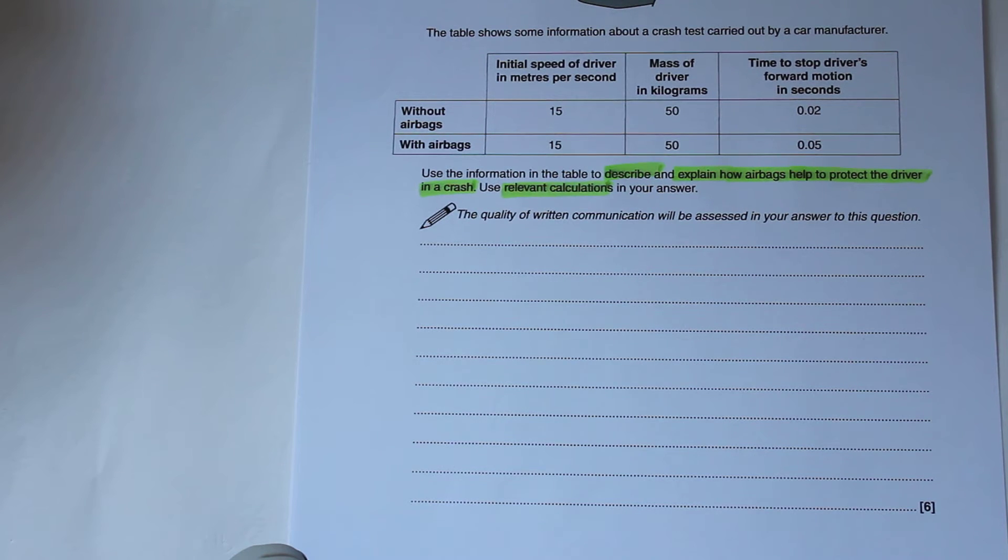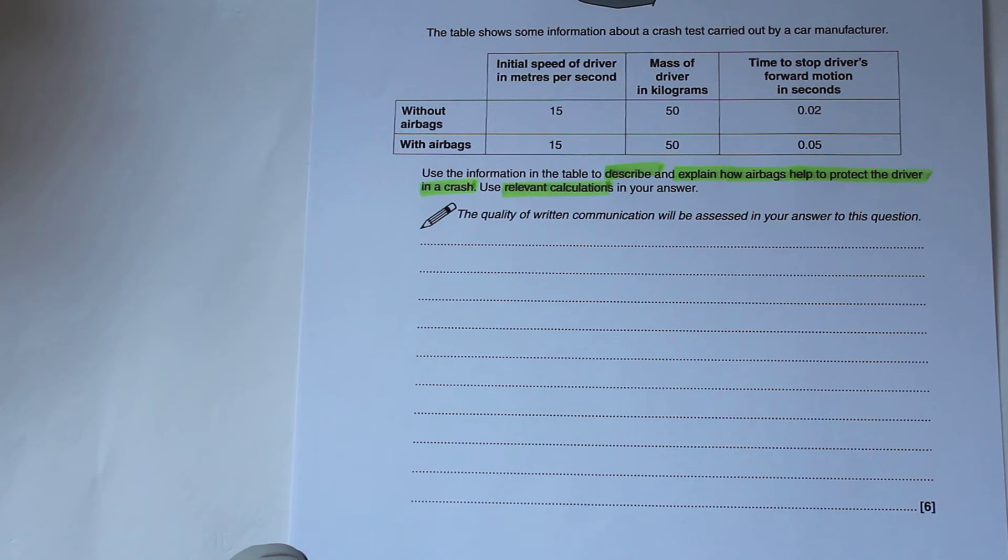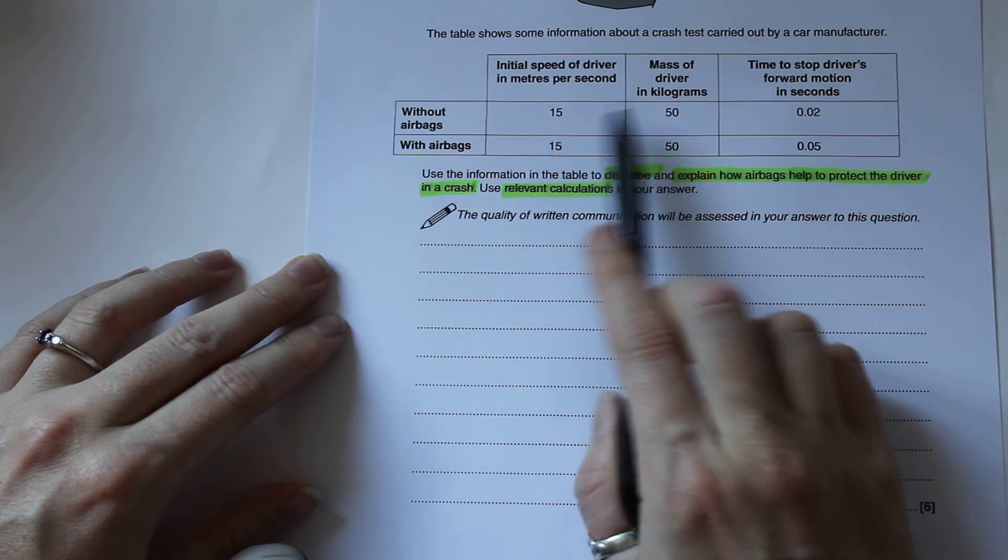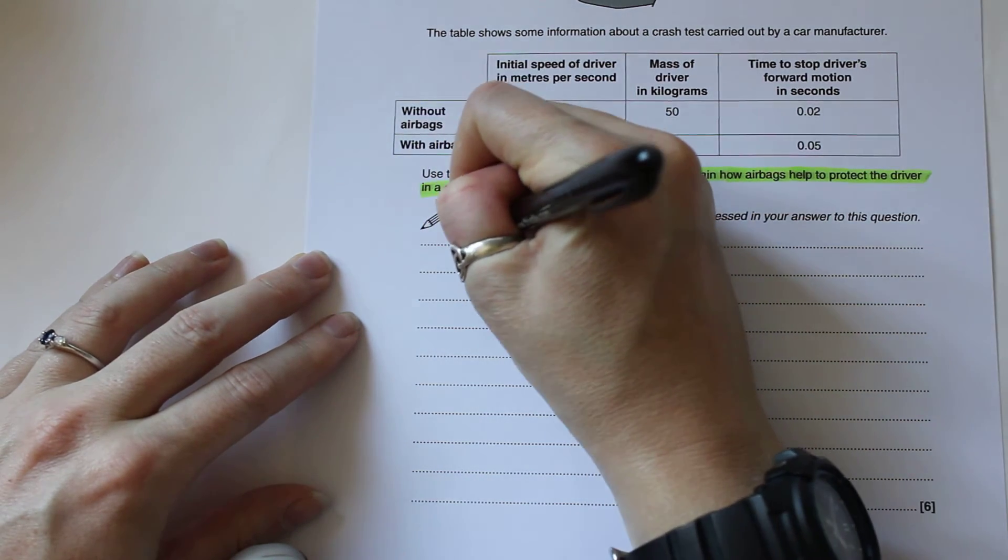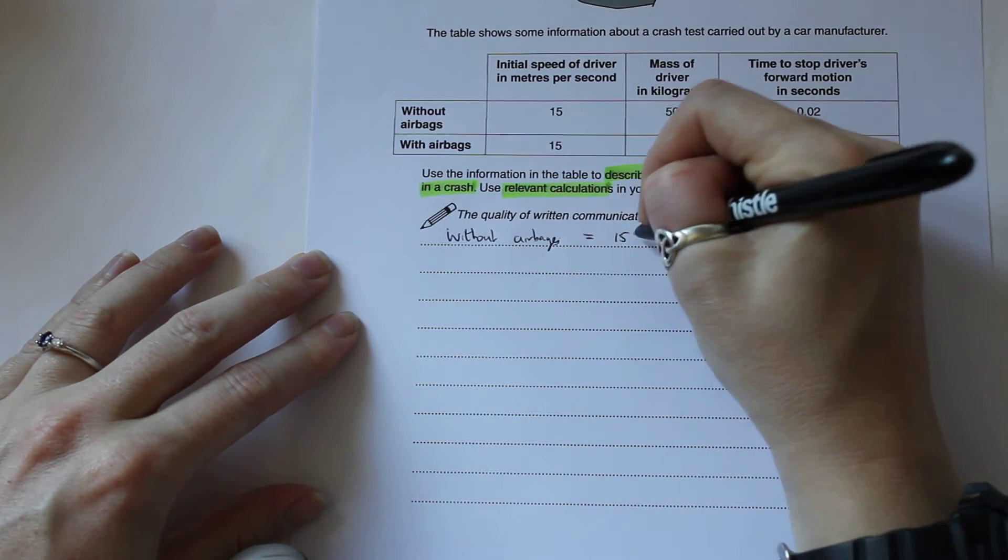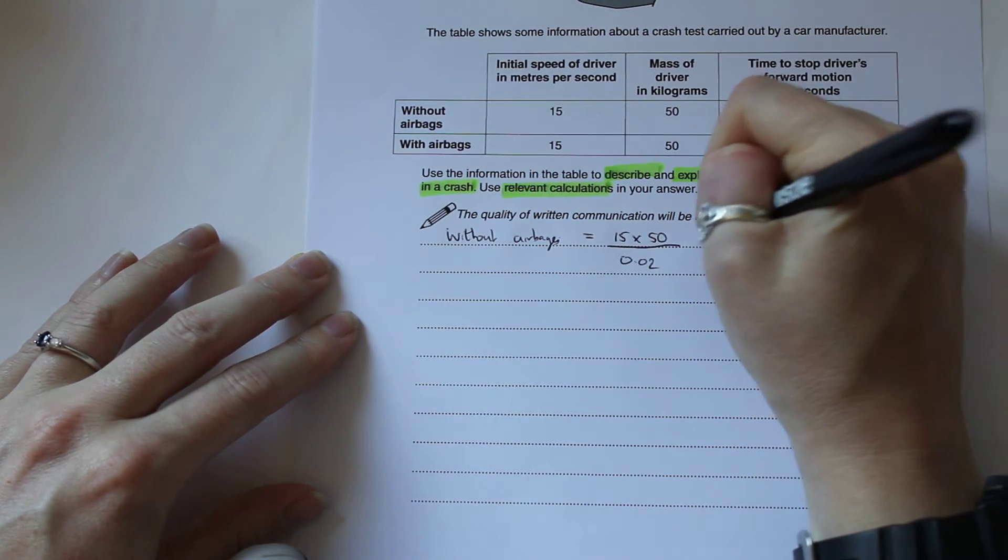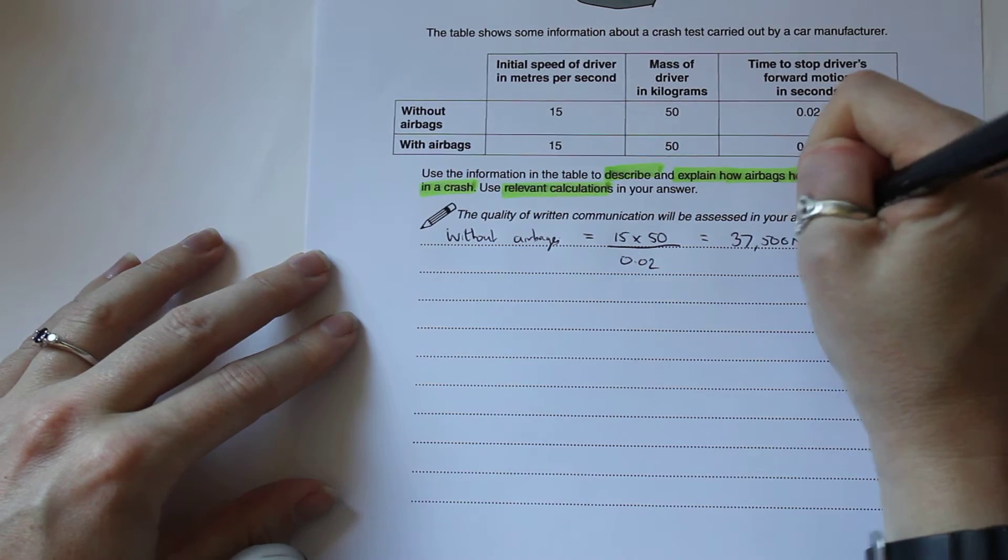To work out the force that acts on the driver is the change in momentum divided by time. To work out momentum, it's mass times velocity. We're going to work out the force acting on the drivers. To do that is going to be the mass times by the velocity. In this case, it can be 15 times 50 and then divide that by the time. Without airbags, first of all, is going to be 15 times by 50 and then divide that answer by 0.02. Plug that into your calculator and that's going to give you an answer of 37,500 newtons.